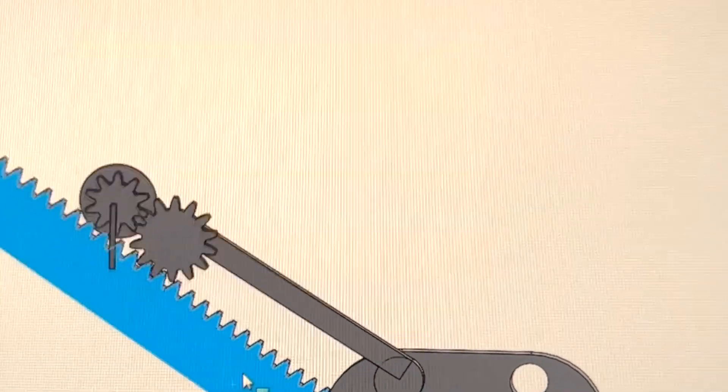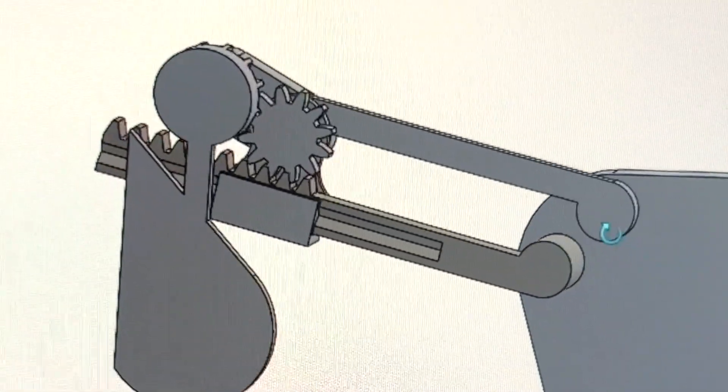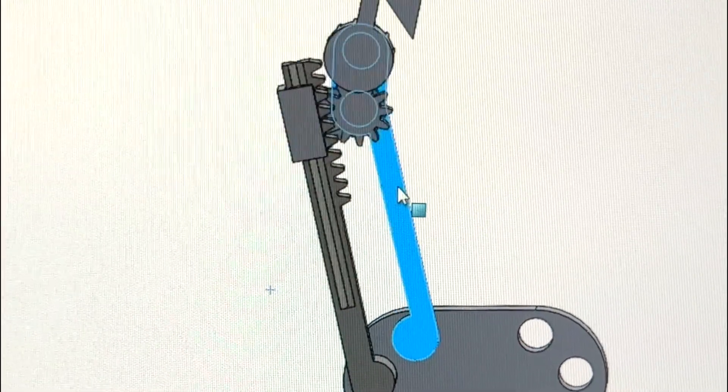So I hopped in SolidWorks and the first step was to try to rough out the upper mechanism. As a design choice, I wanted there to be two different motions: the swing of the arm and then the rotation of the halves of the heart.